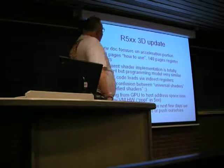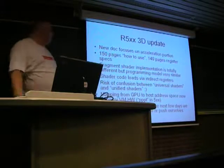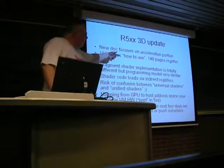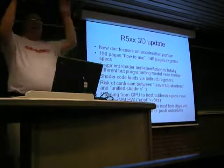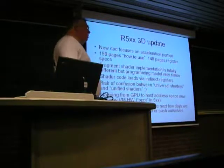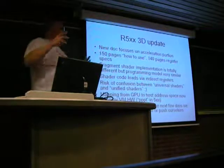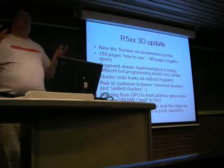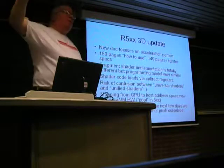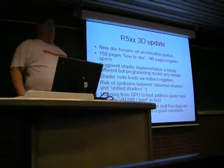The 5XX 3D document is titled 'Acceleration' — we're trying to make clear it's not a total programming guide, it's the acceleration mode. It's about half how-to-use and about half register specs, covering vertex formats, routing, swizzling, and how all the ref works. Fragment shader implementation — the hardware is totally different. From a performance standpoint, all the things that make you go fast are new on the 5XX. The primary thing is the sequencer and the amount of threading it can handle — that's all different. The programming model is almost exactly the same — the main change is the shader op-codes for the fragment shader, which are loaded differently.